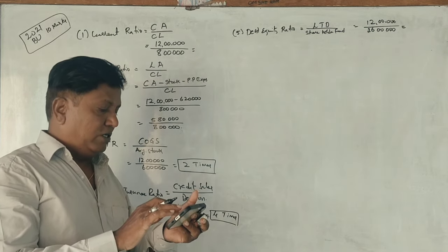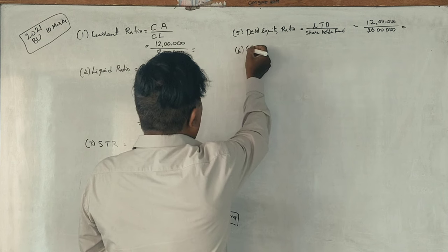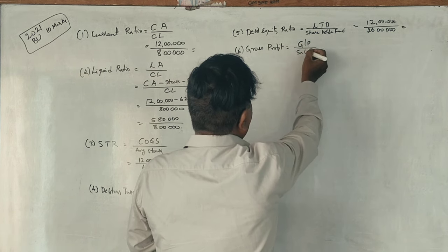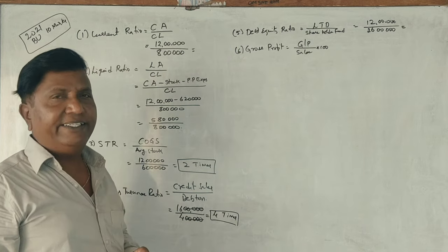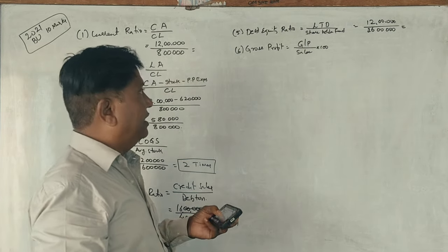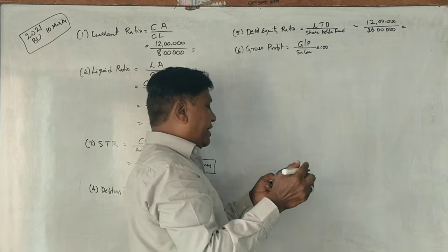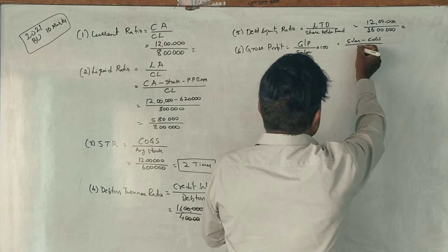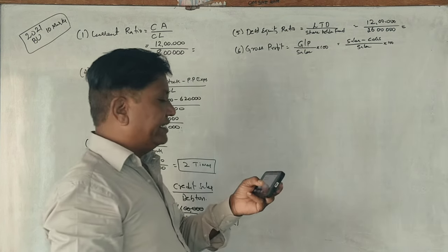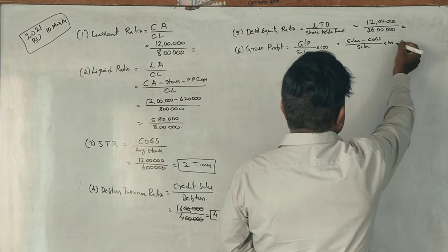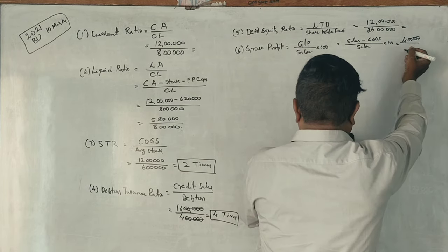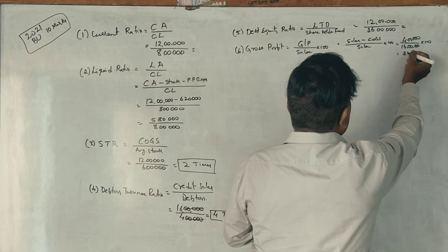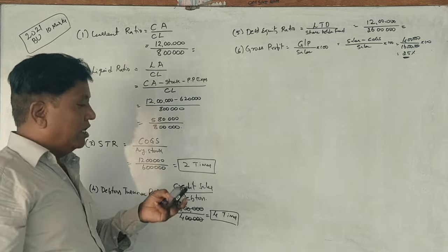Next, gross profit ratio. The formula is gross profit divided by net sales into 100. Gross profit equals sales minus cost of goods sold, which is 16 lakhs minus 12 lakhs equals 4 lakhs. So gross profit ratio is 4 lakhs divided by 16 lakhs into 100, giving 25%.